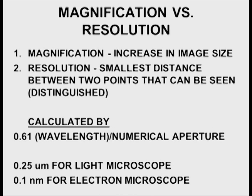But for electron microscopy, it is much smaller — it's 0.1 nanometers. That's due to the fact that the wavelength of electrons is much smaller. So if the wavelength of light is on the top of the equation and you've got a much smaller number, you're going to have a smaller resolution number.